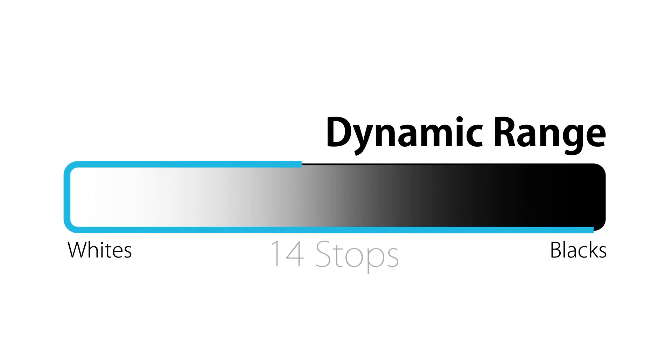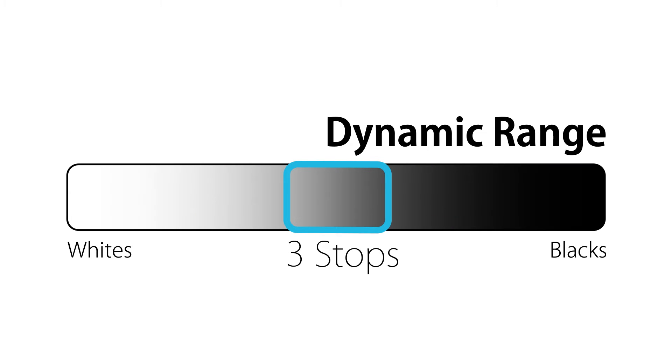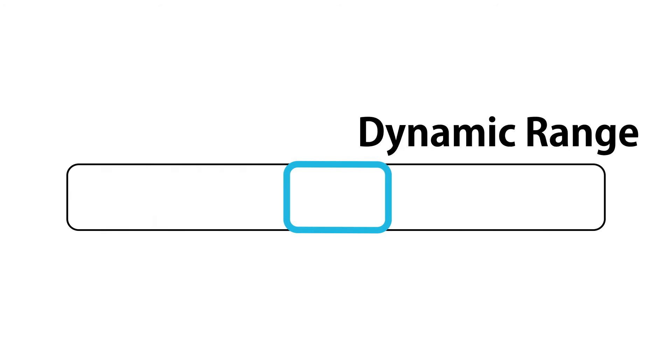Different sensors and films have different dynamic ranges. This is how many stops of light can be sensed between the bright and dark parts of the image before information is lost.